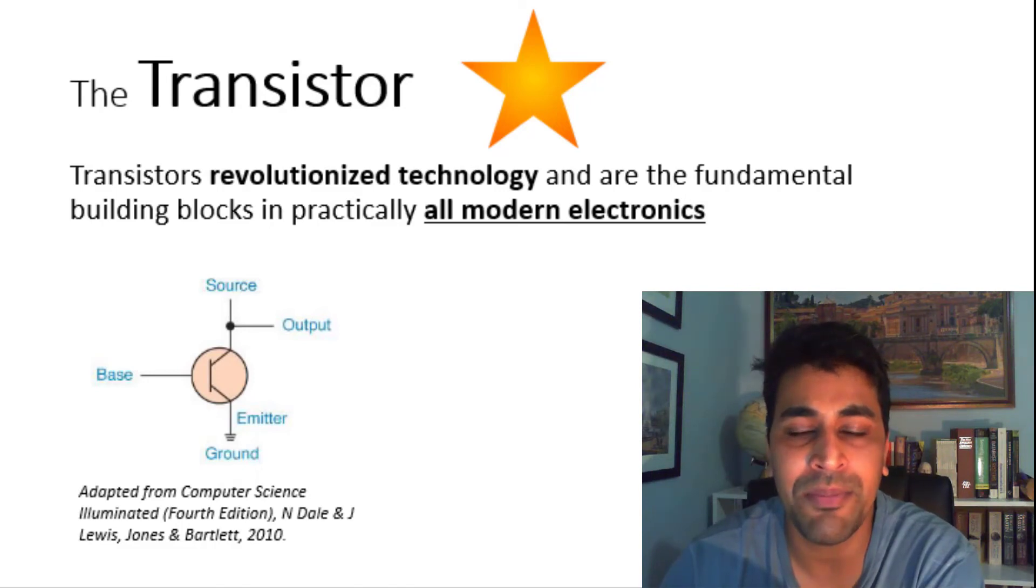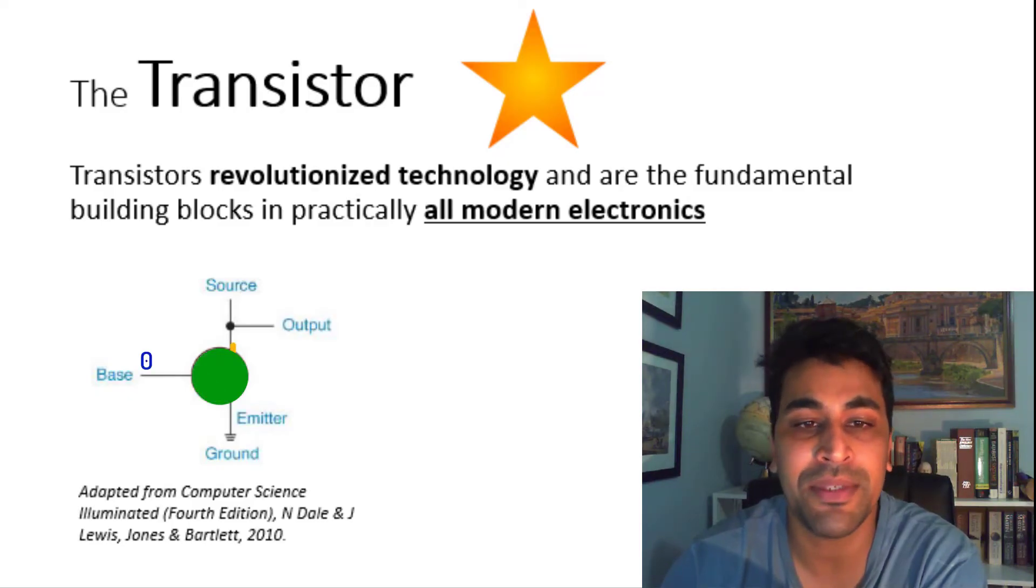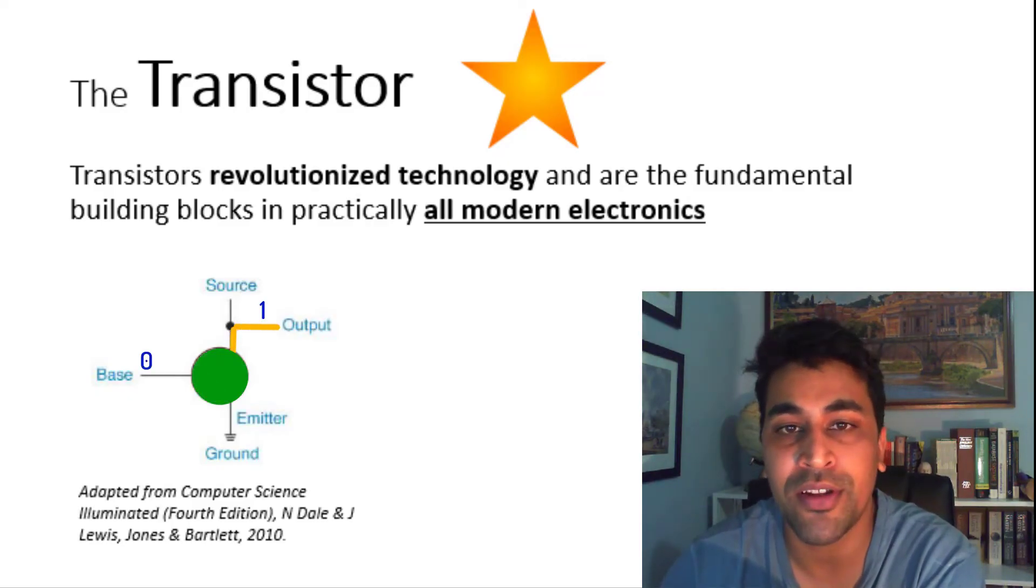The emitter is typically connected to the ground wire. If the base is on, then the transistor emits and is earthed. If the base is off, then the transistor becomes an insulator, and the output is on.